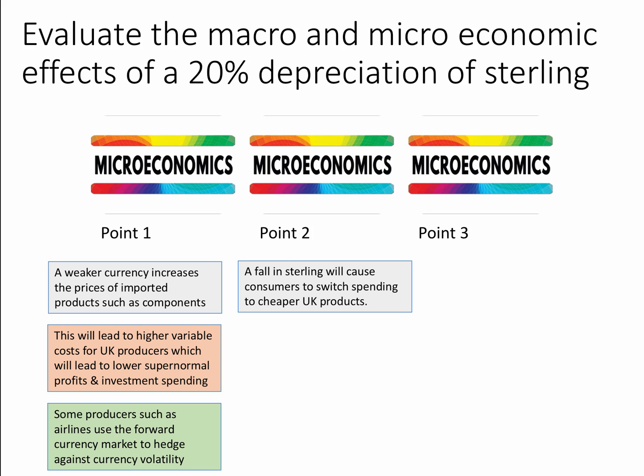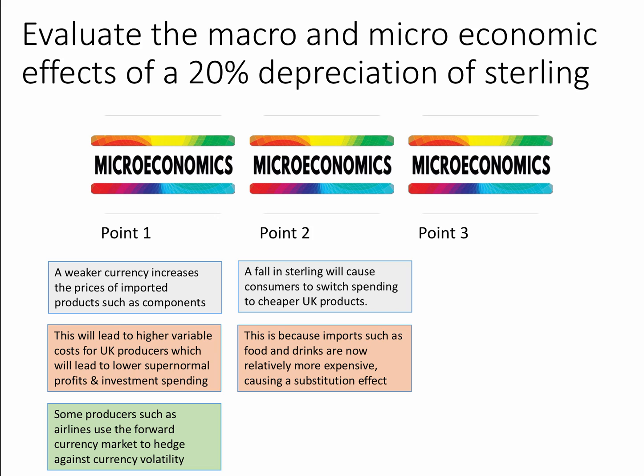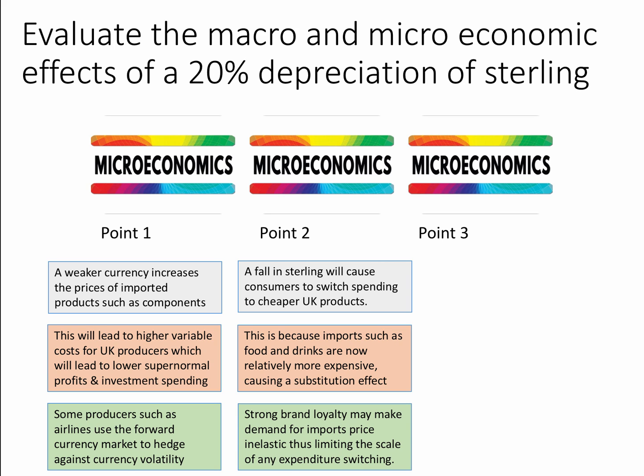Second point: a fall in sterling will cause consumers to switch their spending to cheaper UK products — that's a micro effect in markets. This is because imports such as food and drinks are now relatively more expensive, causing a substitution effect. At the micro level, sales and profits for domestic producers — perhaps domestic food producers or beer makers — might increase, showing an outward shift of the revenue curve. However, strong brand loyalty may make demand for imports price inelastic, thus limiting the scale of any expenditure switching. There's no guarantee people will necessarily switch away from imported goods they prefer.